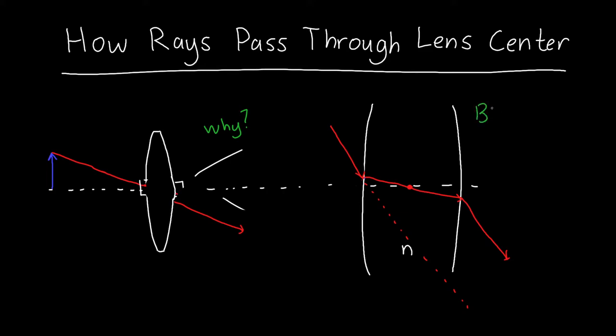But if we make our favorite approximation, the thin lens approximation, then we take the distance that this ray propagates to be equal to zero. And in that case that just means that it's going to get refracted off the first interface, refracted off the second interface. But because this distance we're taking to be zero, or at least much smaller than everything else involved in our system, then there's no shifting of the beam.